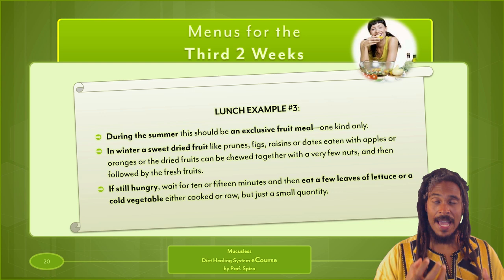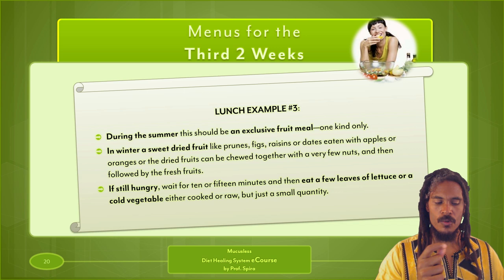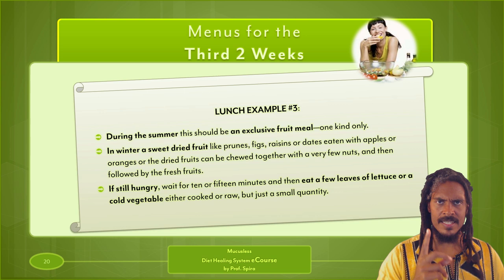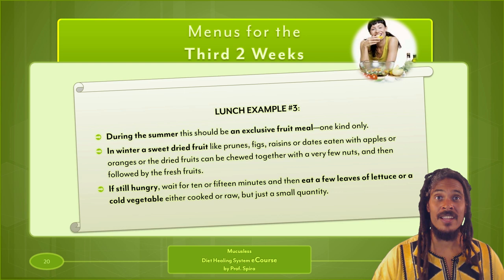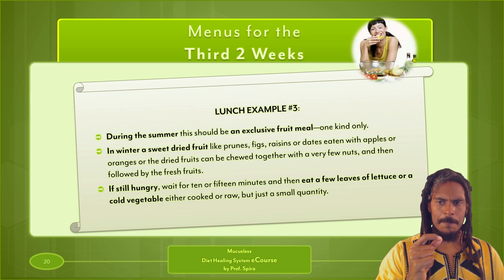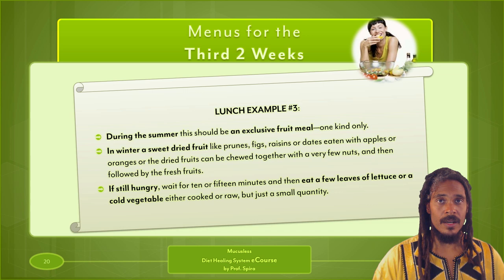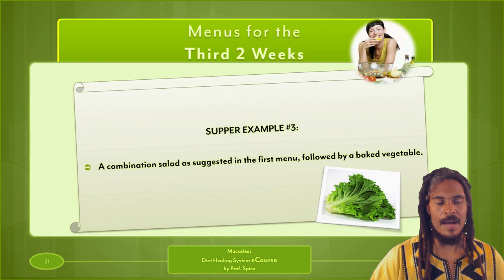You see what you're going through, you feel what's going on, and you can make the right choice that can change your life and have some very important positive changes. The supper example for the third two weeks is a combination salad as suggested in the first menu, followed by a baked vegetable — that's our standard vegetable meal.